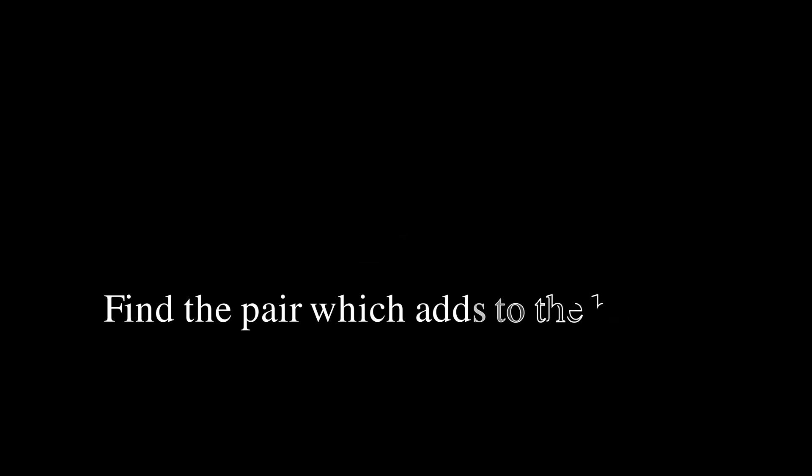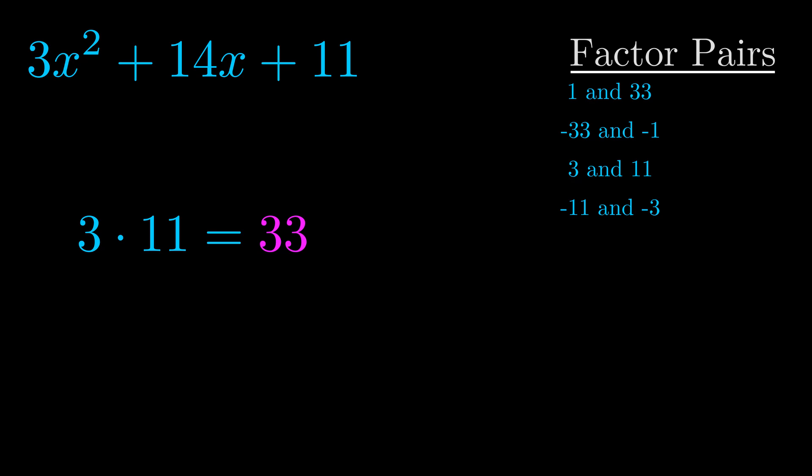The b value is the coefficient on the x term. That's the middle term, the one that we haven't done anything with yet. And really this is the only factor pair that we need.